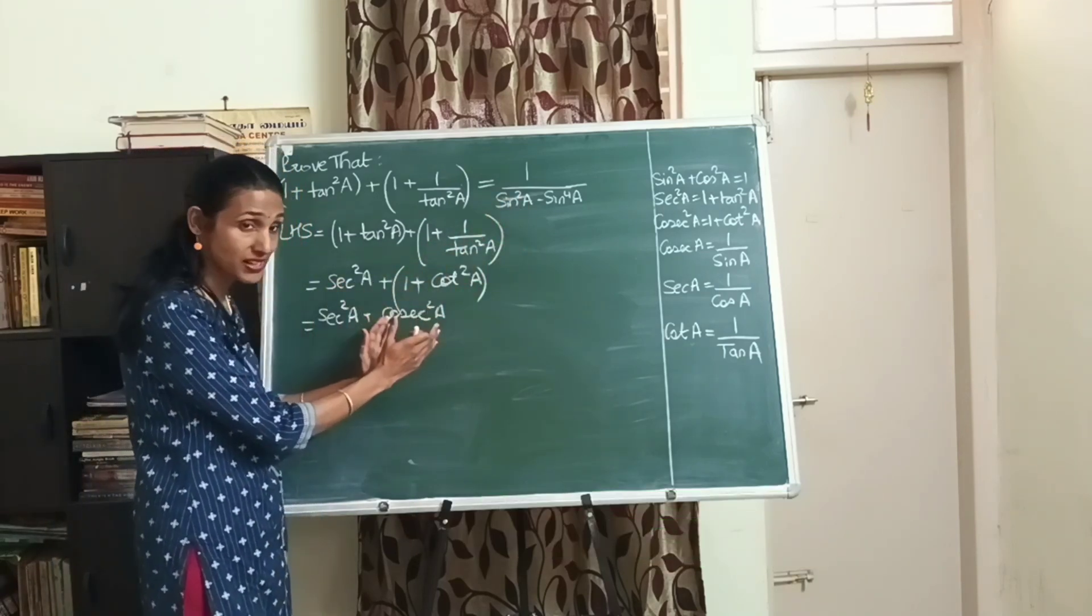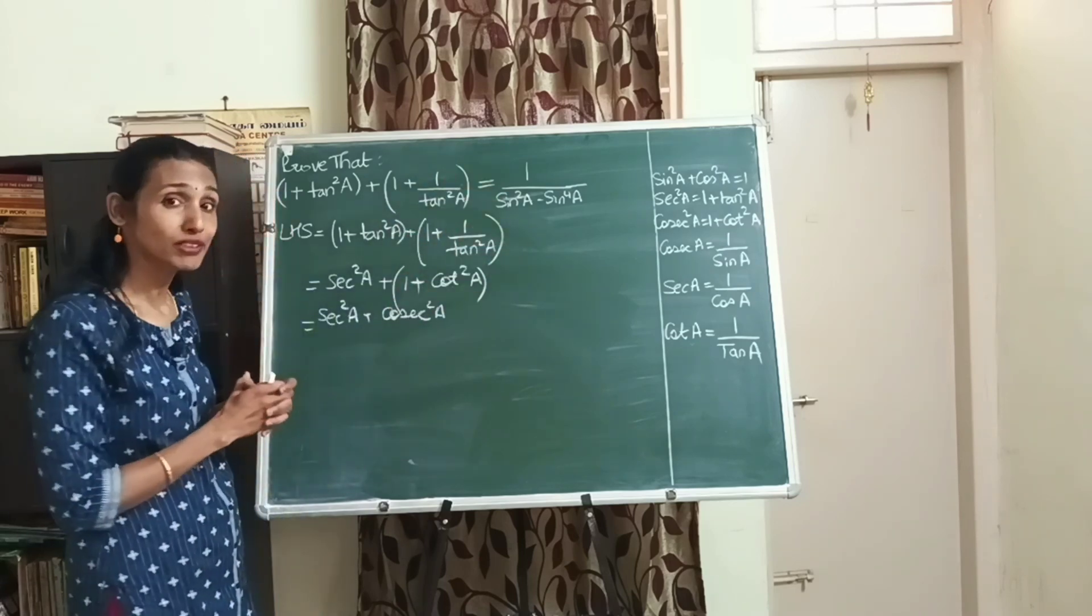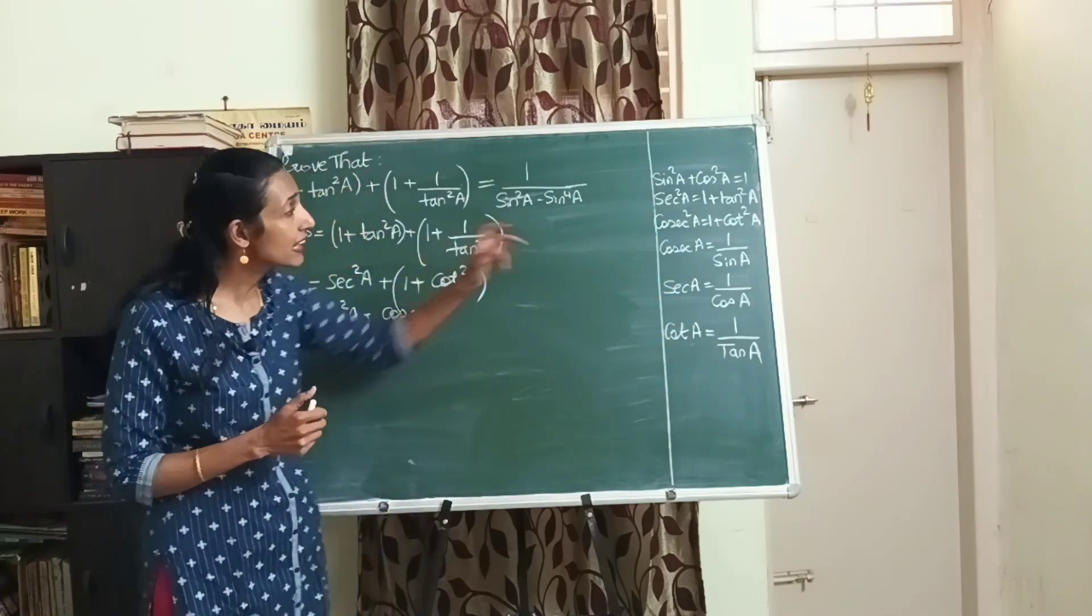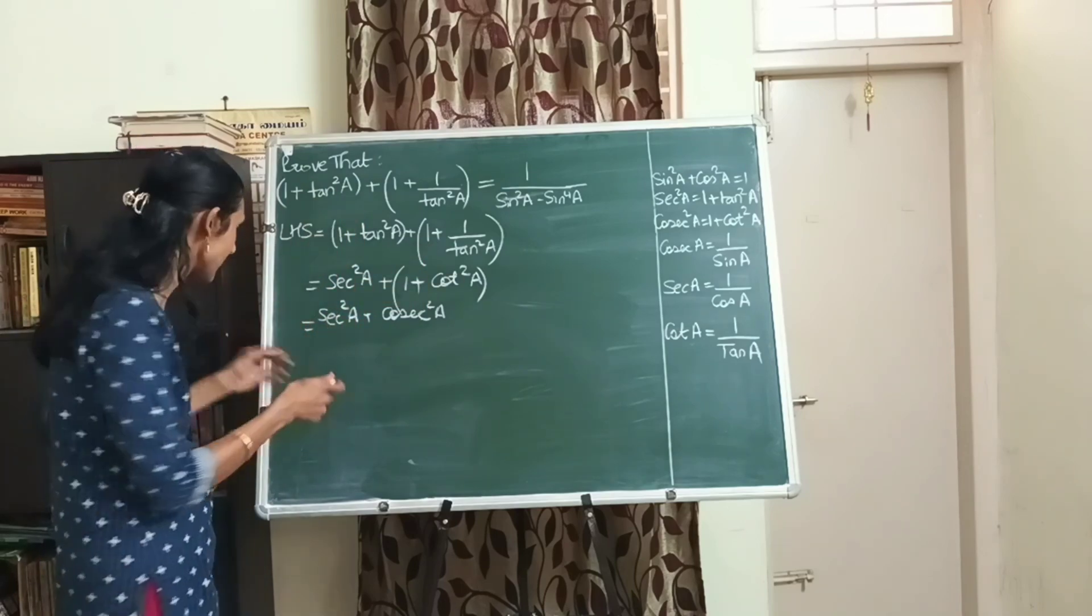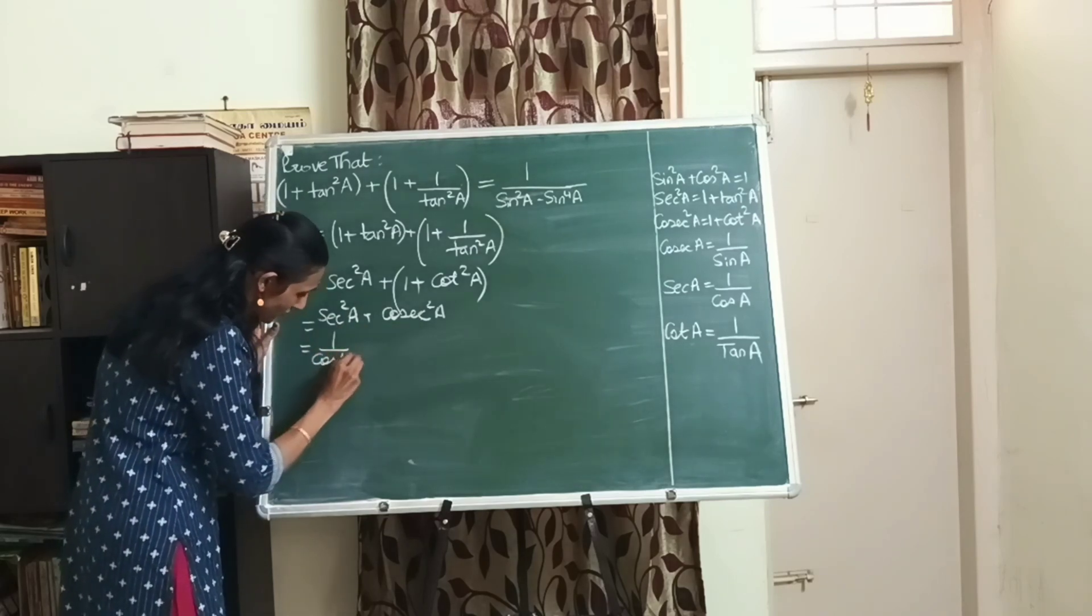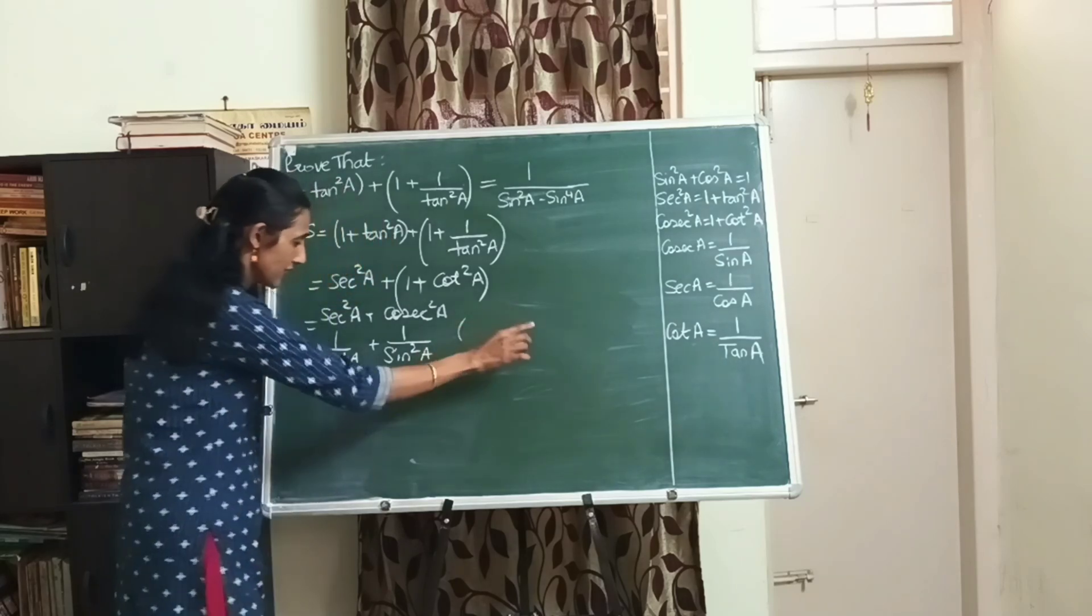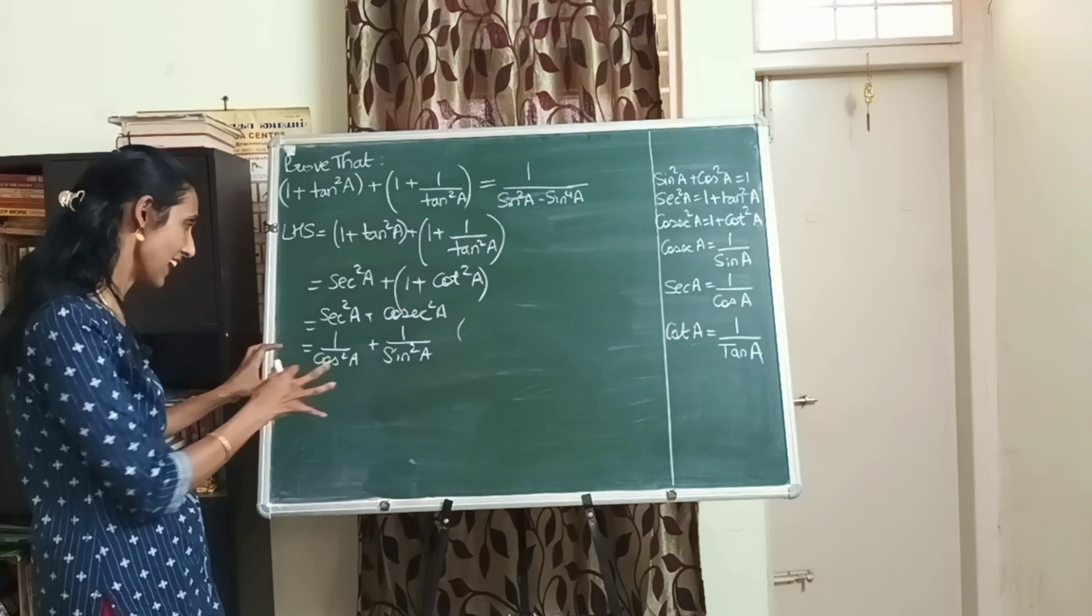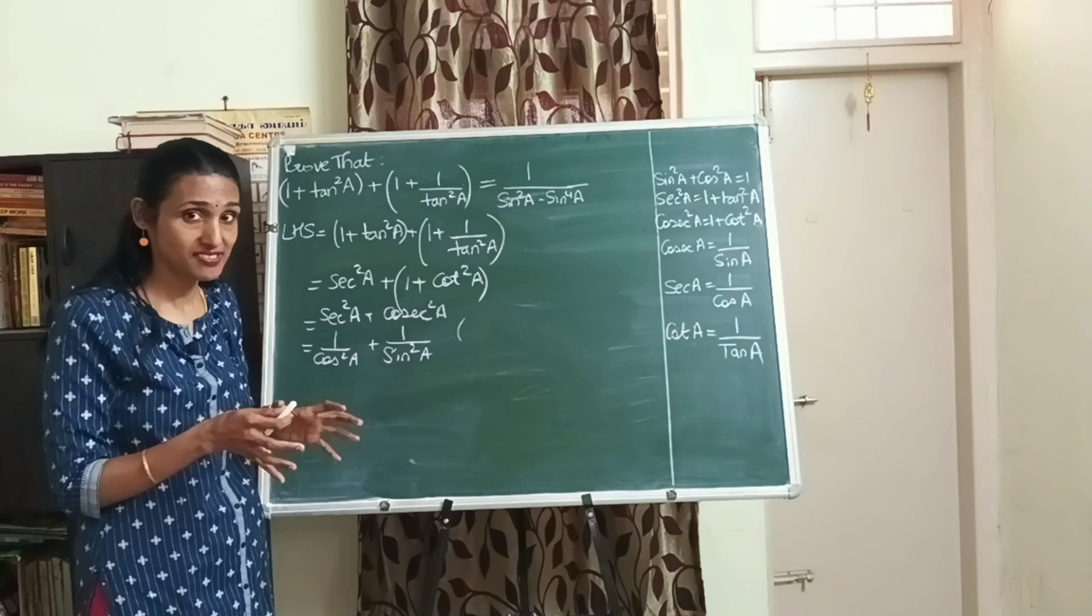Let's see what we want: we want 1 upon sin square a minus sin raised to 4a. Here I do have sec square and cosec square but there is no fraction like this. What is sec a? Sec a is 1 by cos a, cosec a is 1 by sin a. So let me substitute those formulas so that I can introduce fractions. I'll write sec square a as 1 by cos square a and this as 1 by sin square a. With this I've got the fractions.